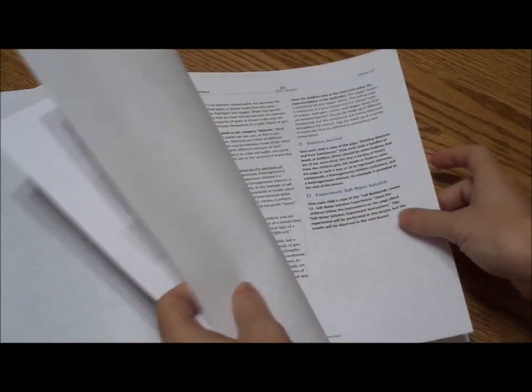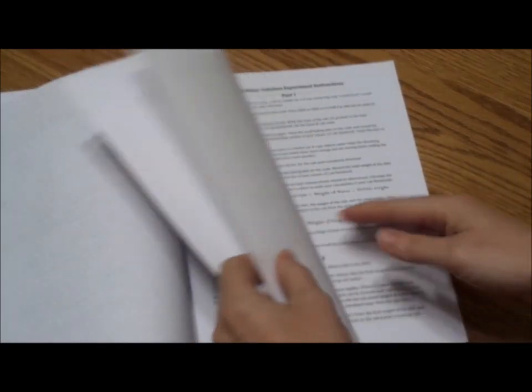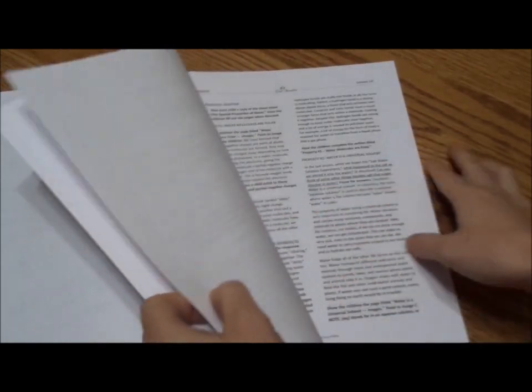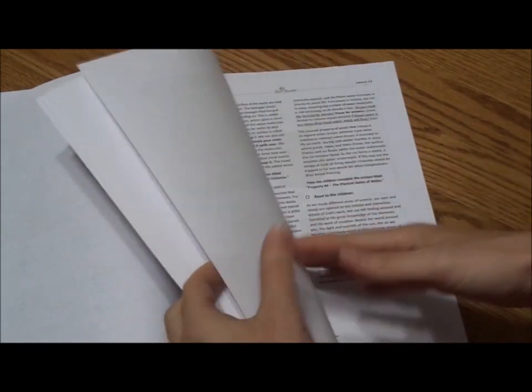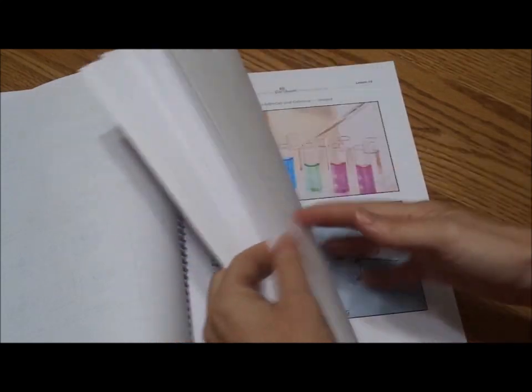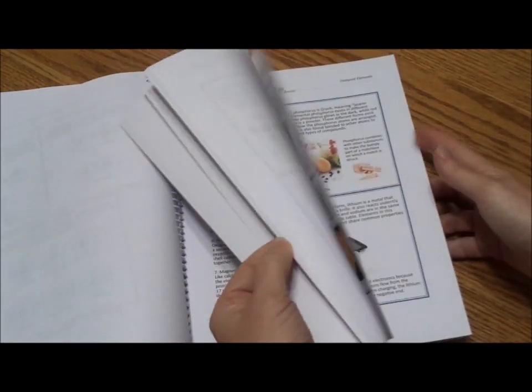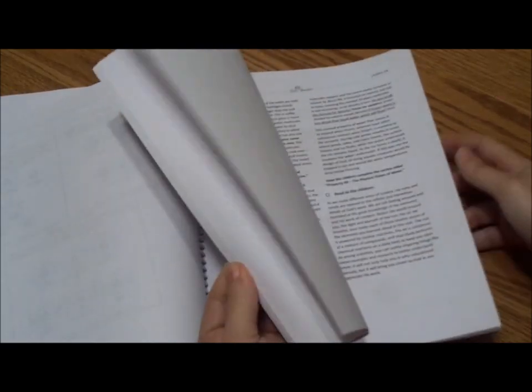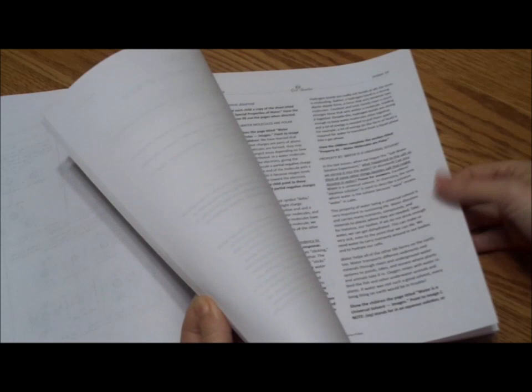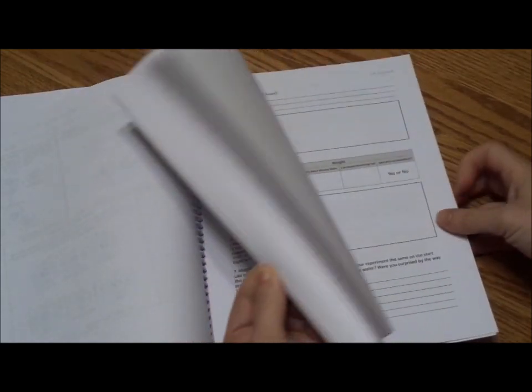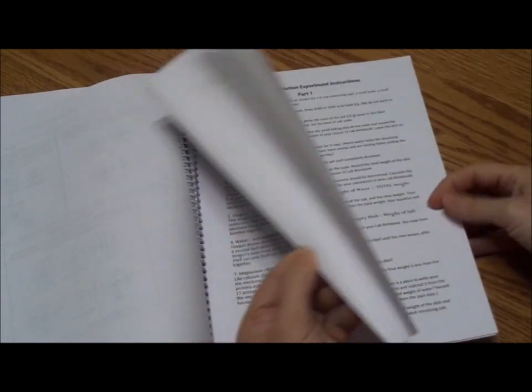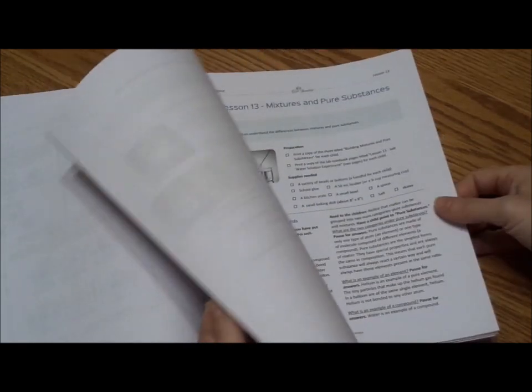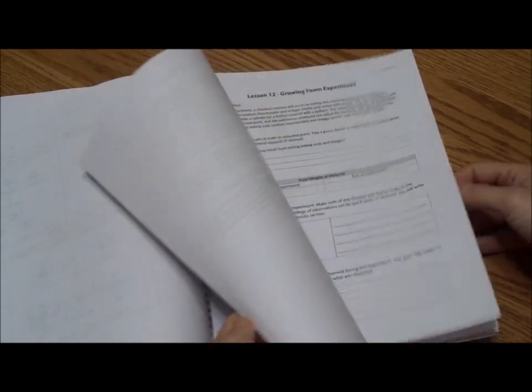Some of the lessons have extensions which means that you can do them if you have a middle schooler and a high schooler, say you could do these together and then give your older kid the extensions. Trying to find one of these lessons. Naturally because I want to find one I can't. But anyway the extensions, you do the whole lesson together and then for the older kids they have research projects or extra labs that they have to do as part of their extension. And that's just to make it a little more beefed up for kids who this might be just a little bit too basic for.